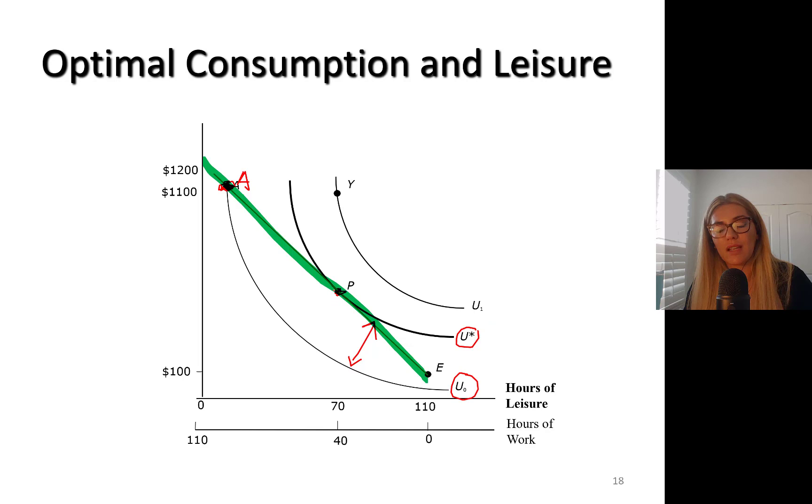Let's take a look at point Y. This point is unattainable - you can't achieve this because your budget line takes you all the way up to here. That's the maximum you can achieve. You can achieve everything on budget line or inside, but if you go inside you're not utilizing all your resources.